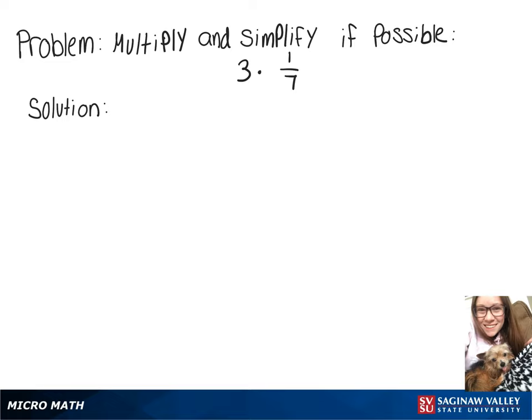In this video, we're going to do 3 times 1 over 7. To help with the visualization, I'm going to rewrite that as 3 over 1. Then we'll do 3 over 1 times 1 over 7.